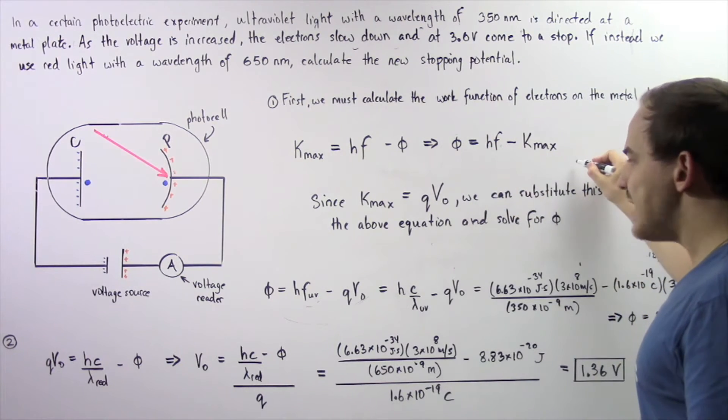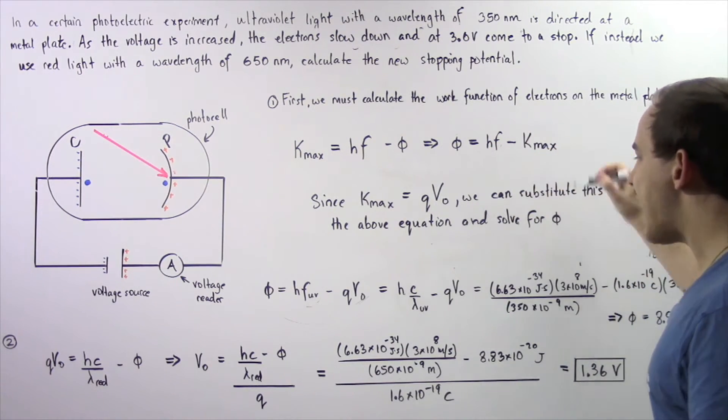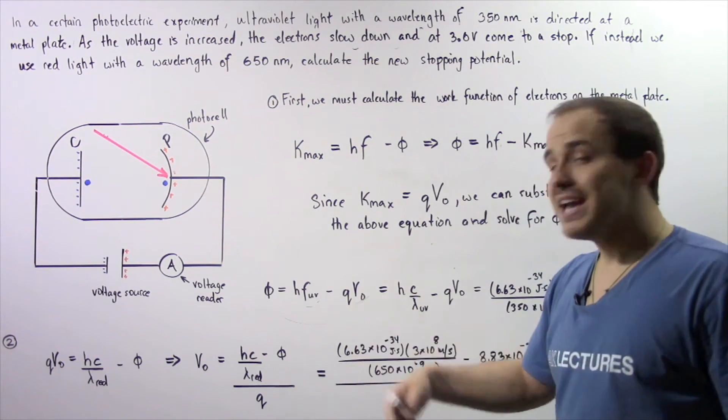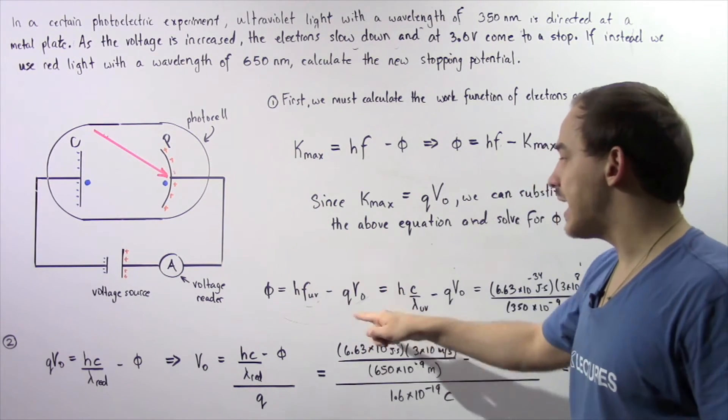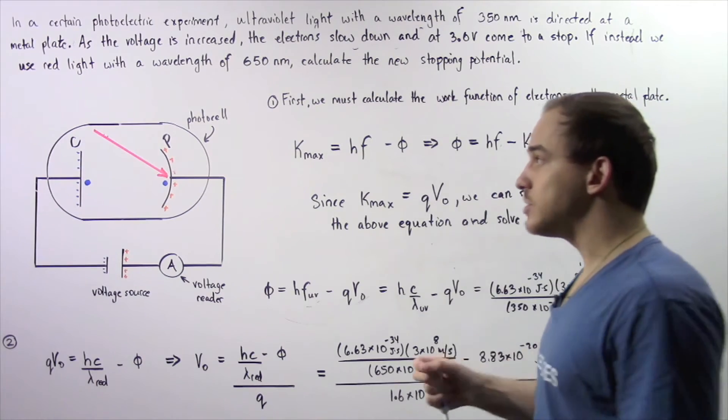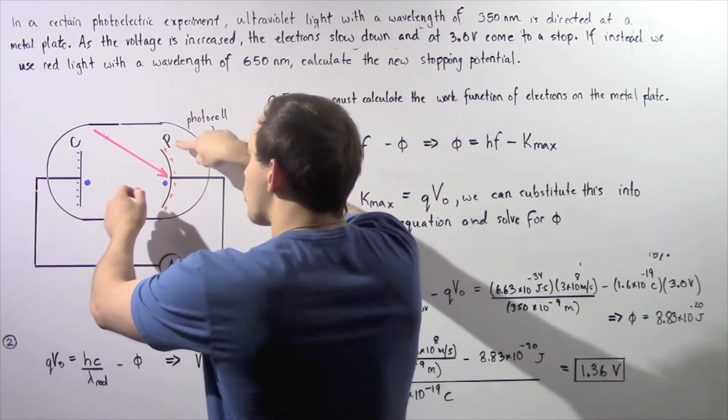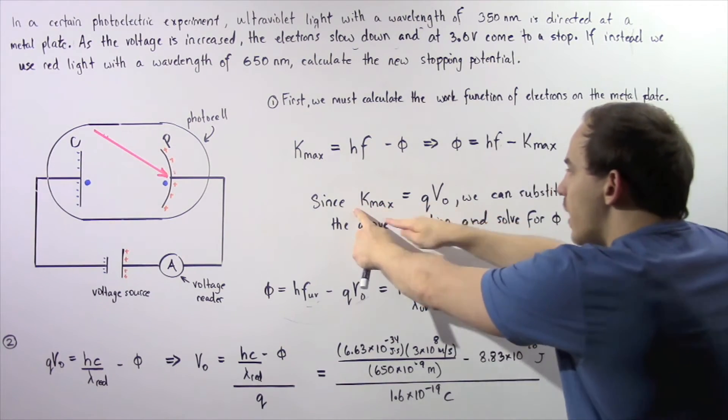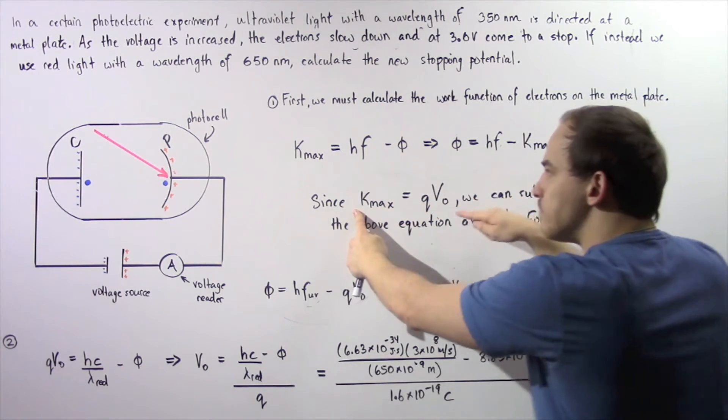So basically, we take this equation and we replace K max with Q multiplied by V naught, where Q is the charge on the electron and V naught is the voltage difference that exists across plate P and plate C. So once again, where exactly does this equation come from?